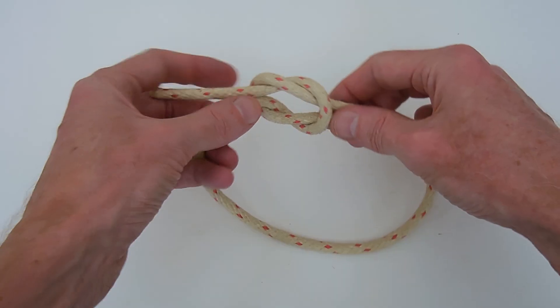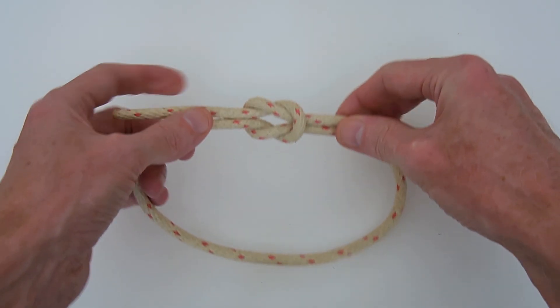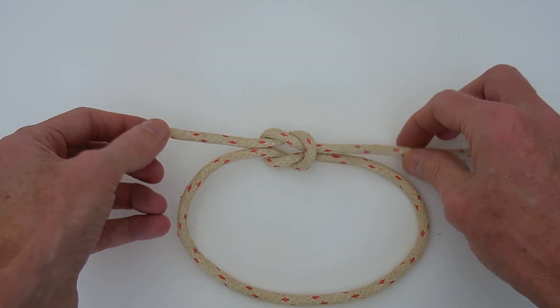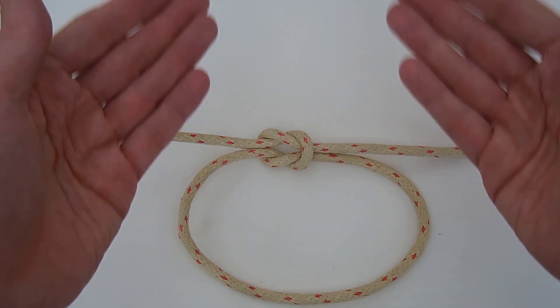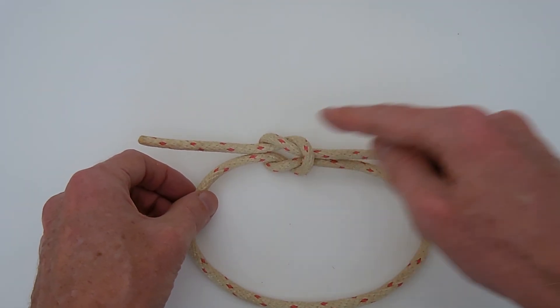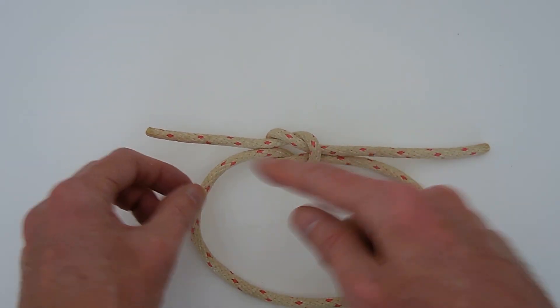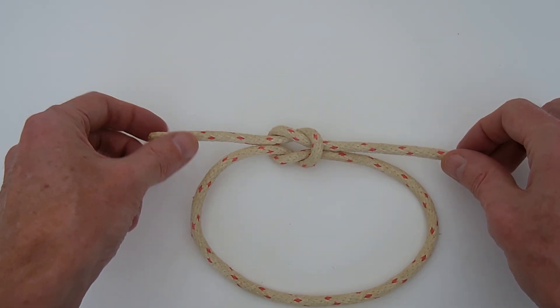You could do the same thing in reverse, right over left followed by left over right, and this forms a reef knot, which is basically the same as the knot that you use for shoelaces without the extra loops that form the drawstrings that let you pull it undone.